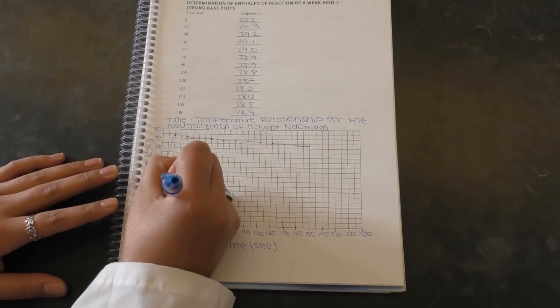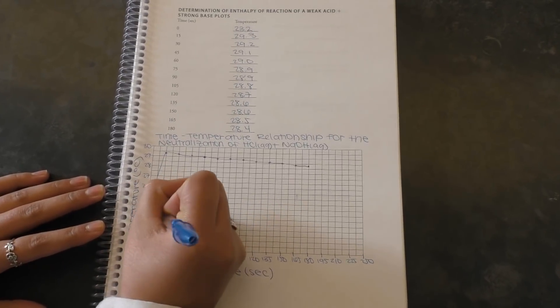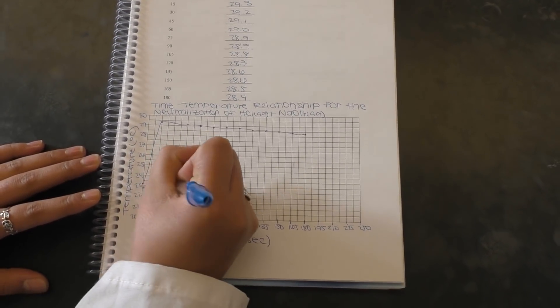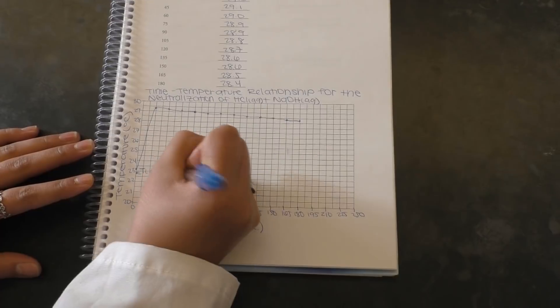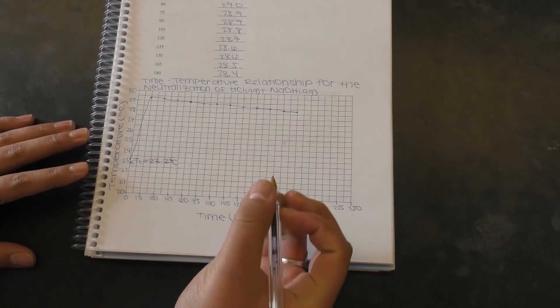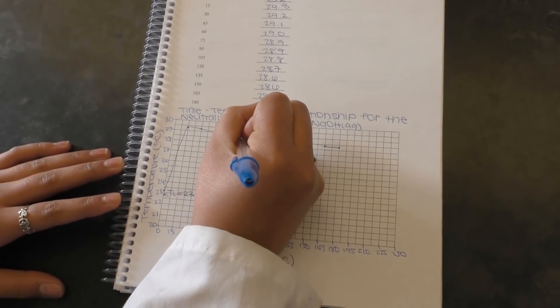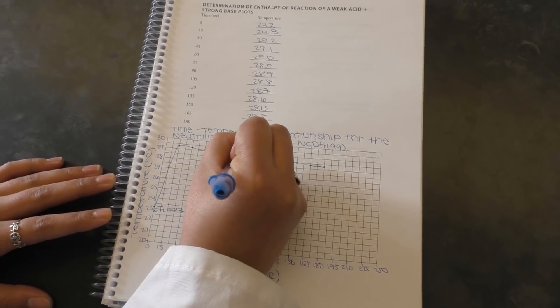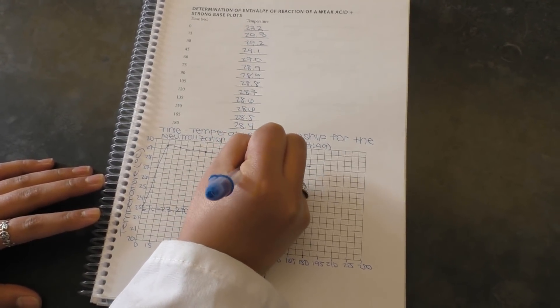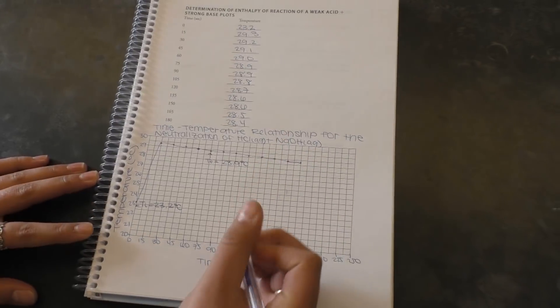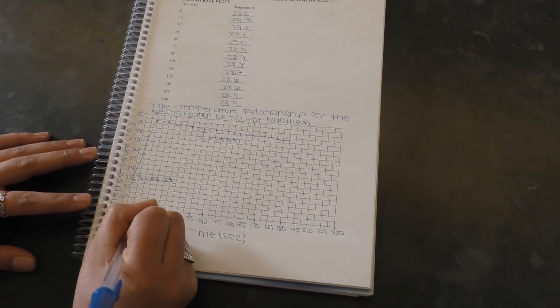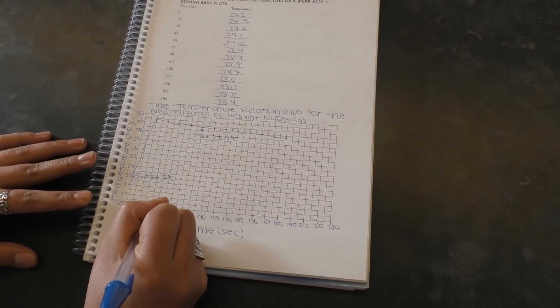Now be sure to label the initial and final temperatures of your calorimeter's contents, TI and TF. TI is the temperature of your solution in your calorimeter before you added anything to it. TF is the temperature at which your data plateaus. And finally, you must also label your change in temperature, or delta T. This is just the difference between your final and initial temperatures.